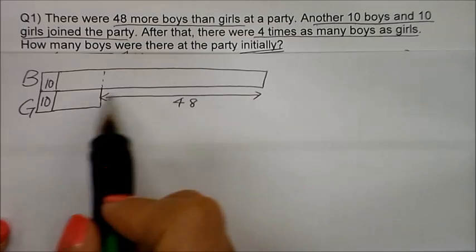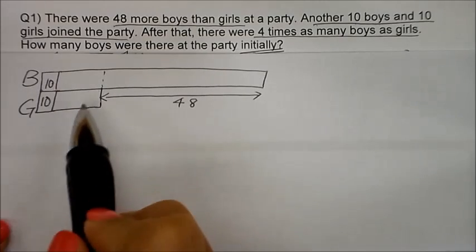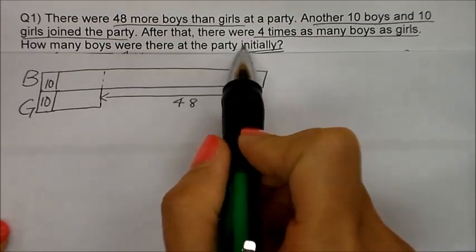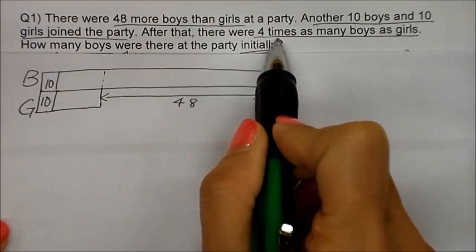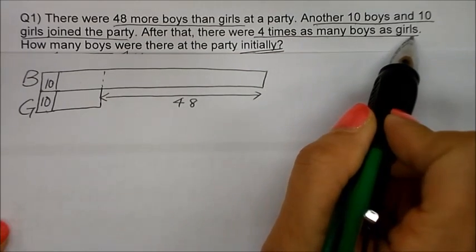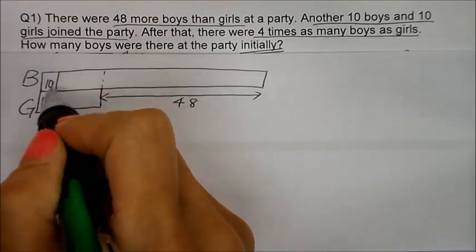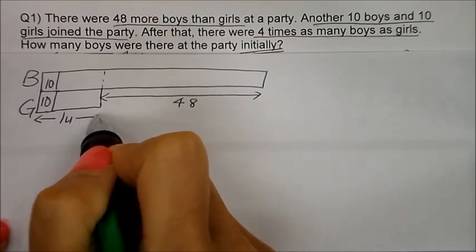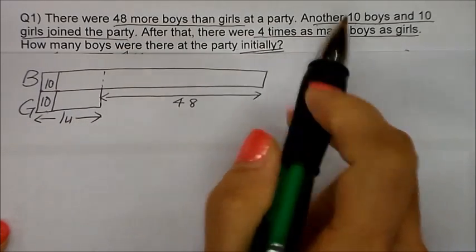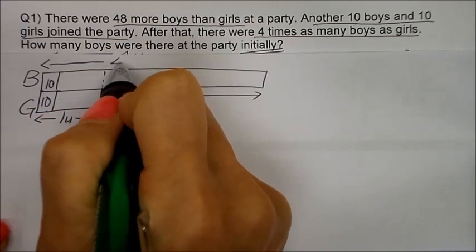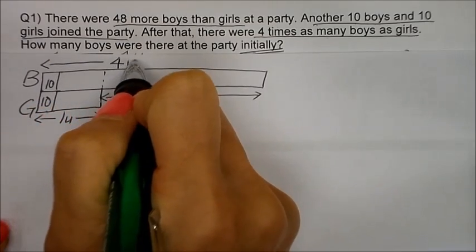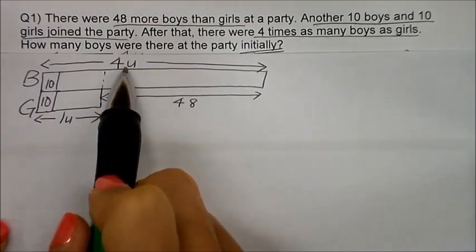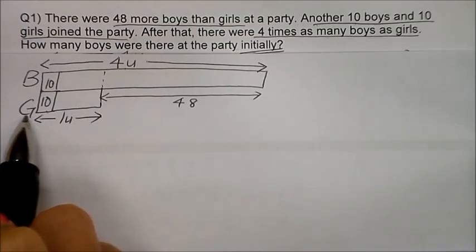After ten boys and ten girls join the party, there were four times as many boys as girls. So now we know that if girls is one unit, the boys will be four times as many — so the boys will be four units. Four times as many boys as girls.